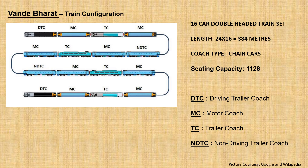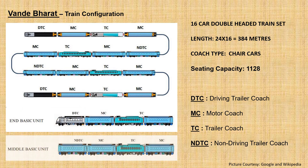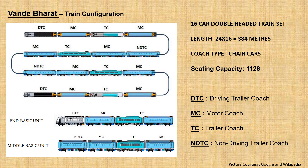Before going into the details of TCMS, it is very important to know about the configuration and architecture of Vande Bharat. Vande Bharat is a 16-car double-headed transit consisting of four basic units: two numbers of end basic unit consisting of driving trailer coach, two numbers motor coach and trailer coach, and two numbers of middle basic unit consisting of non-driving trailer coach, two numbers motor coach and trailer coach. Total length of the train is 384 meters and having passenger capacity of 1128.